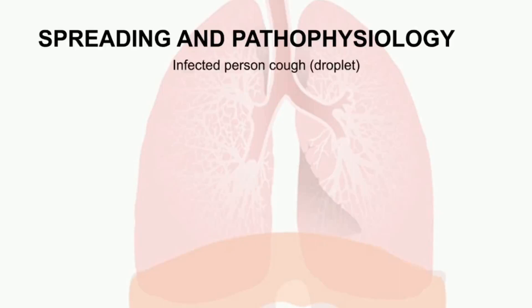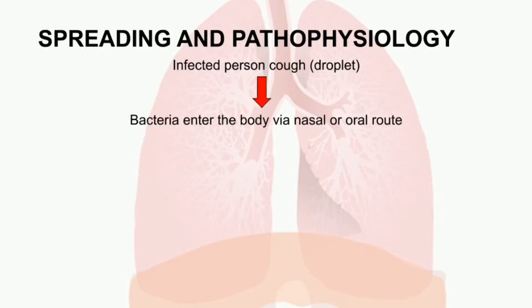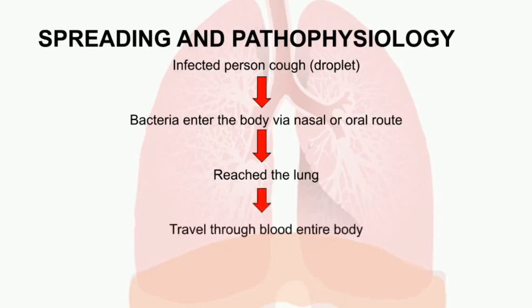An infected person with TB is coughing. The bacteria becomes airborne and spreads through the air. During gas exchange, oxygen and carbon dioxide are exchanged, and at that time the bacteria mixes with the blood and travels through it.